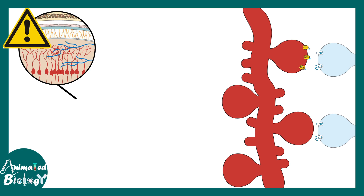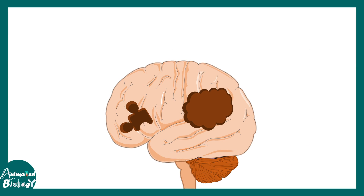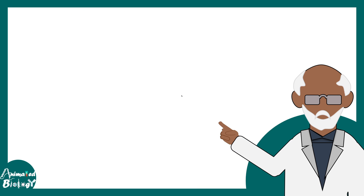Using these techniques, scientists found that specific mutations such as Shank3 and Syngap1 are associated with the development of synapses and dendritic spines. When these proteins are mutated, there are alterations in synapse formation and synaptic architecture, leading to neurological complications in autism. Since autism is a neurodevelopmental disorder, these abnormalities originate during the time when the brain was being built.